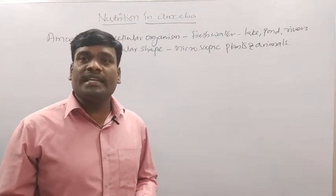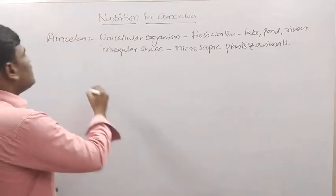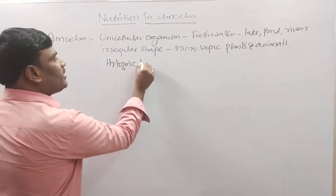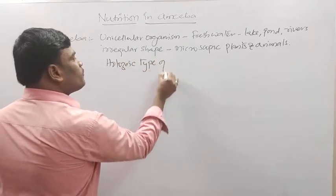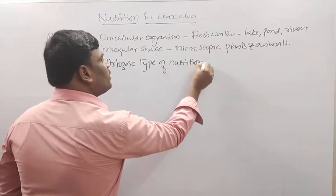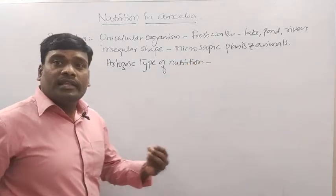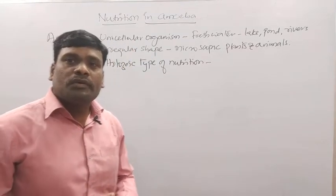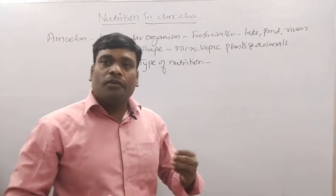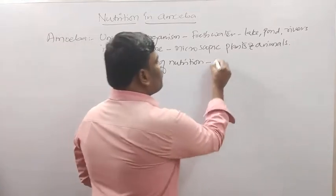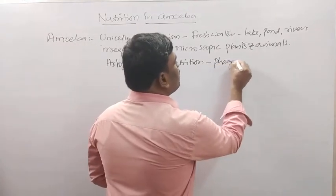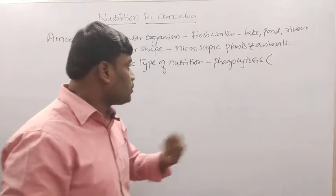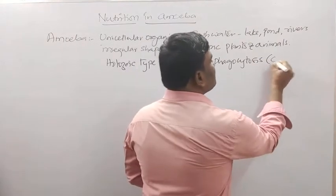In amoeba, holozoic type of nutrition is seen. The process of obtaining food by amoeba is called phagocytosis. Phagocytosis means cell feeding.